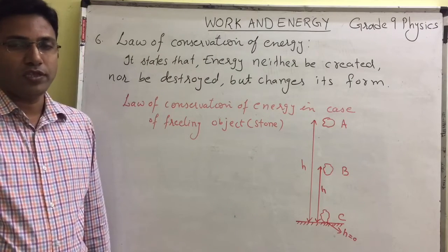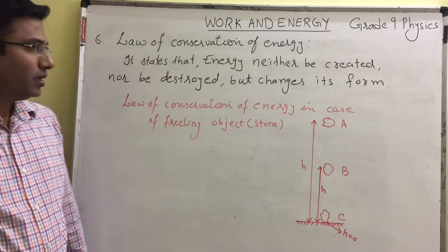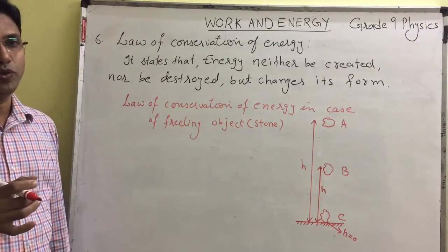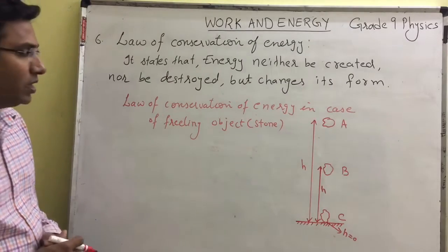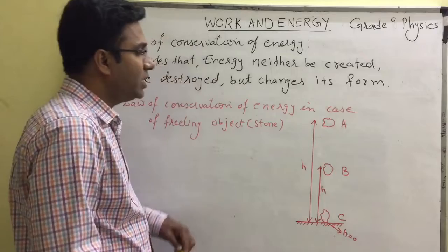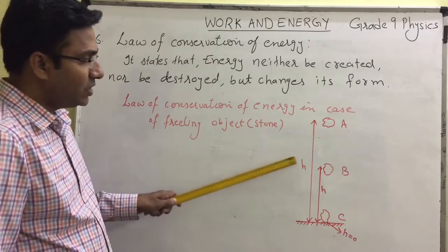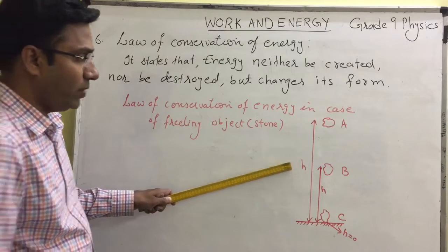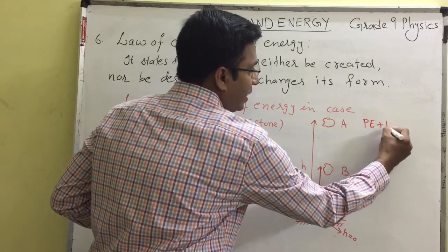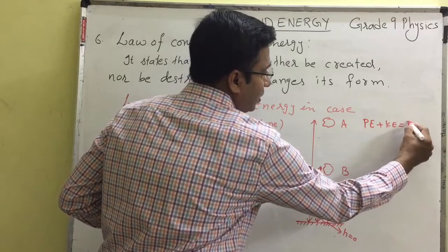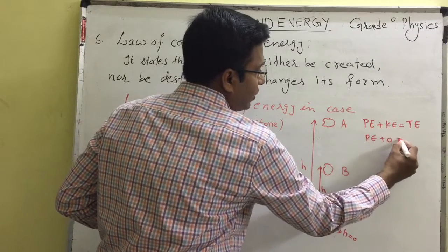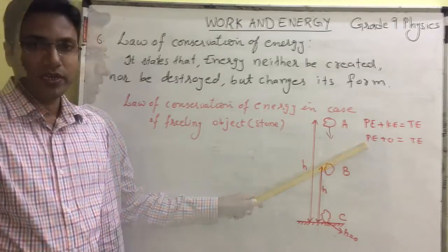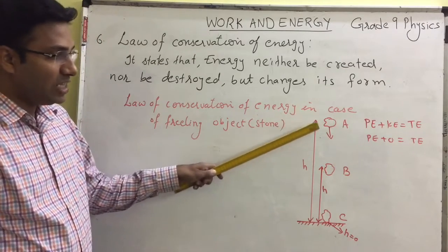Now let us understand the law of conservation of energy with the help of an example — the case of a freely falling object. When an object such as a stone is freely falling, how does energy change from one form to another? Let us consider initially the object is at point A, that is at height h. At point A, the object will have only potential energy as it is not moving. So here it has only potential energy and kinetic energy of the object will be zero. The total energy at point A is equal to potential energy.